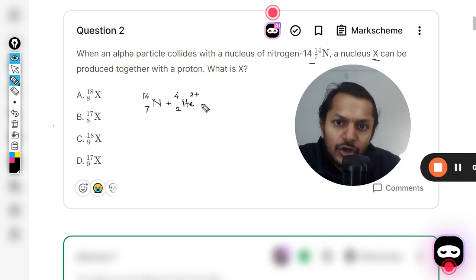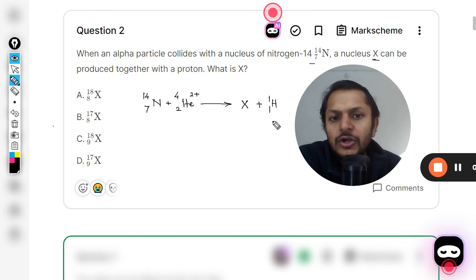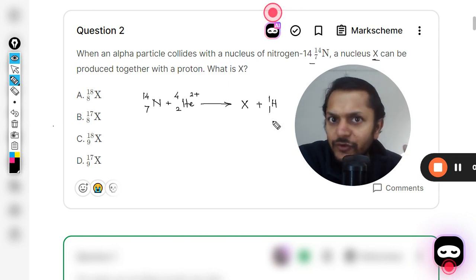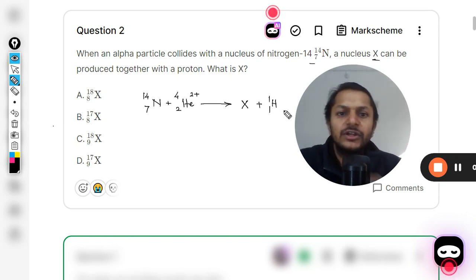It is producing another nucleus, that is X, and a proton is produced. This is very important. We are just writing proton as H. So 1 is the atomic mass number for proton, and 1 will be taken as the atomic number for the proton. So it will be ¹₁H.